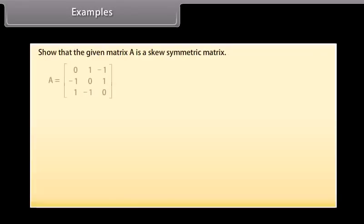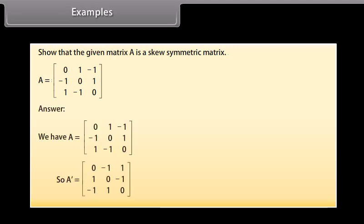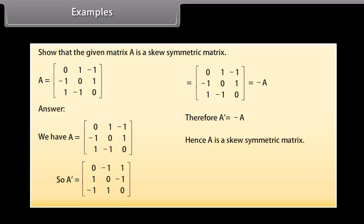Example: Show that the given matrix A is a skew-symmetric matrix. We have A given. So A transpose is the matrix row-wise: 1st row [0, −1, 1], 2nd row [1, 0, −1], 3rd row [−1, 1, 0]. We can see that this is equal to minus A. Therefore, A' equals minus A. Hence, A is a skew-symmetric matrix.